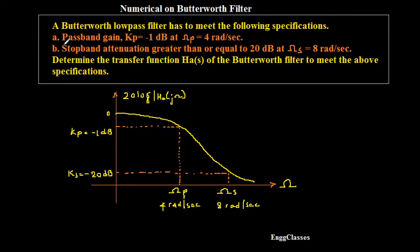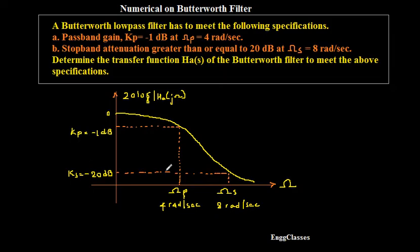There are two specifications: A — pass band gain Kp equal to minus 1 dB at omega p equal to 4 radians per second, and B — stop band attenuation greater than or equal to 20 dB at omega s equal to 8 radians per second. We need to determine the transfer function H_A(s) of the Butterworth filter. I have drawn the magnitude frequency response showing Kp equal to minus 1 dB at omega p equal to 4, and Ks equal to minus 20 dB at omega s equal to 8 radians per second.